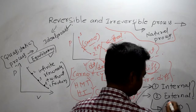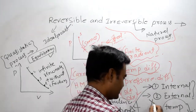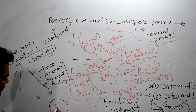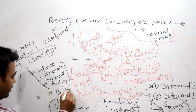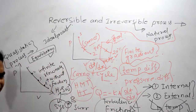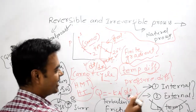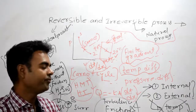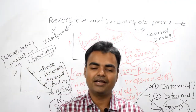To clarify external irreversibility: we draw a system with its boundary and surroundings. Whenever there is a heat or work interaction between the system and surroundings across the boundary — due to pressure difference or temperature difference — that is known as external irreversibility. Thank you for watching; please like, share, and subscribe.